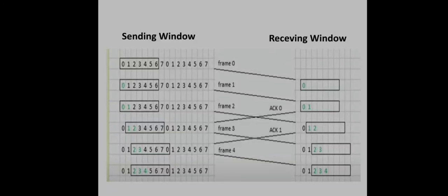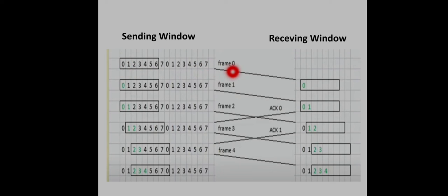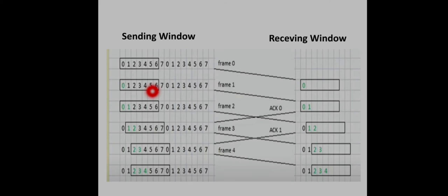Let us look at an example of how the sending and receiving windows work. Taking window size W = 7, both sending and receiving windows have the same size for simplicity. Initially, the sender is ready to send frames 0 through 6, starting from frame 0. After sending frame 0, it is shown in a different color to differentiate frames already sent but not yet acknowledged from frames yet to be sent. Frame 0 stays buffered until acknowledged; frames 1 to 6 are yet to be sent, and frame 1 is being sent now.